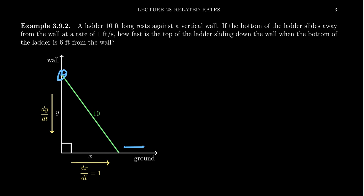Assuming that the ladder stays next to the wall — just a slow slip away from the wall — this part is sliding down. The bottom of the ladder is slipping away from the wall at a rate of one foot per second. How fast is the top of the ladder sliding down the wall, particularly at the moment that the ladder is exactly six feet away from the wall?